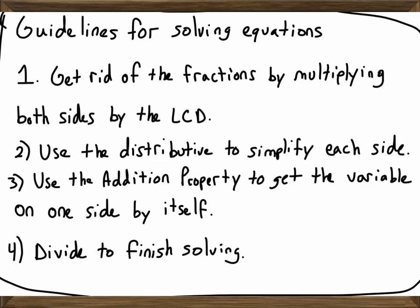Before we get into some examples of solving equations with fractions, we want to go over the different steps. The first thing we want to do is get rid of the fractions — make the fractions go away. The way we accomplish that is by multiplying both sides by our common denominator. Both sides get multiplied by the common denominator. That's the first thing we do.